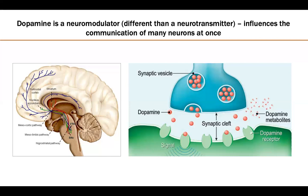There is a third pathway called the mesocortical dopaminergic pathway, involved in cognitive control, behavioral flexibility, and emotional resilience, because it passes through your prefrontal cortex — the region which makes all the decisions.